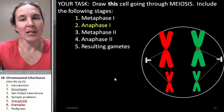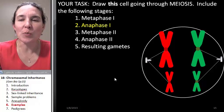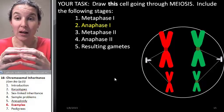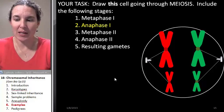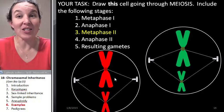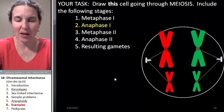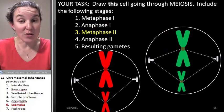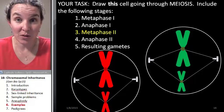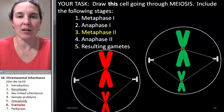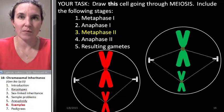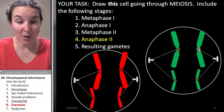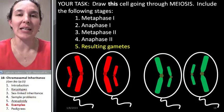In anaphase I we're going to separate the homologues. I've got two cells now — I'm making this into a cell and this into a cell. I've got two cells in metaphase II, where the sisters line up on the metaphase plate, and then in anaphase II the sisters are split apart, and these are all my resulting gametes.